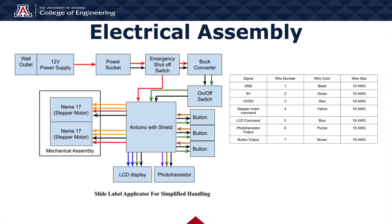We have a schematic for the electrical assembly. It includes the 12V power supply and a power socket with two cords. After the emergency shutoff switch there is a buck converter. From the on/off switch we have the Arduino with the CNC shield, buttons, stepper motors, an LCD display, and a phototransistor. We also have wireless connections to address where components are connected.